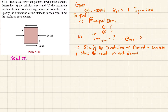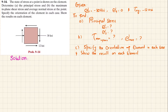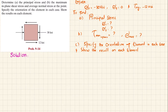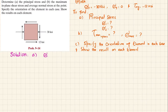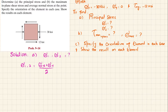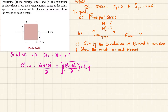In part C, we need to specify the orientation of each element in each case and show the result on the element. So let's start with the solution. For part A, we find the principal stresses σ1 and σ2 using the formula: σ1, σ2 = (σx + σy)/2 ± √[((σx - σy)/2)² + τxy²].